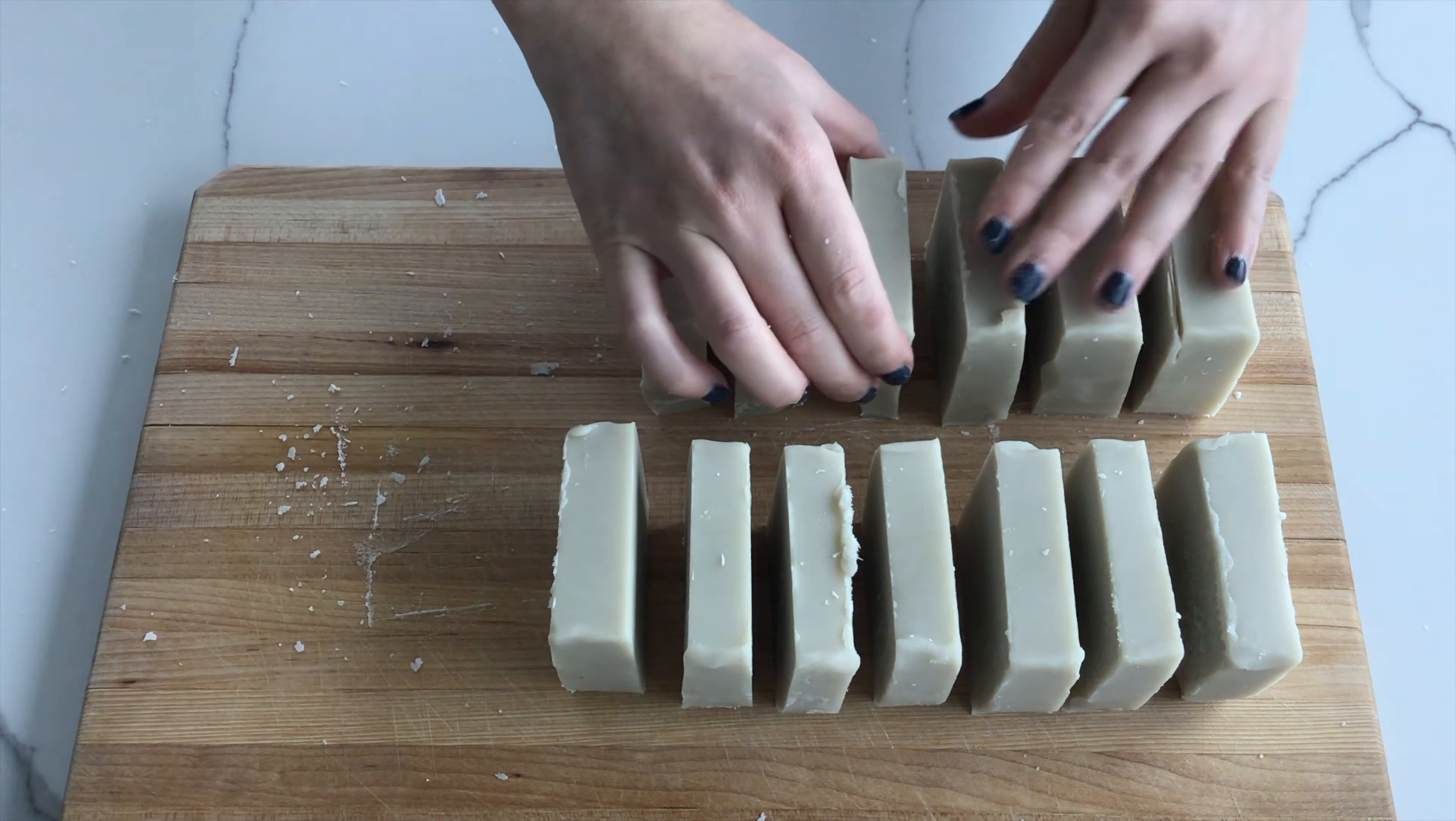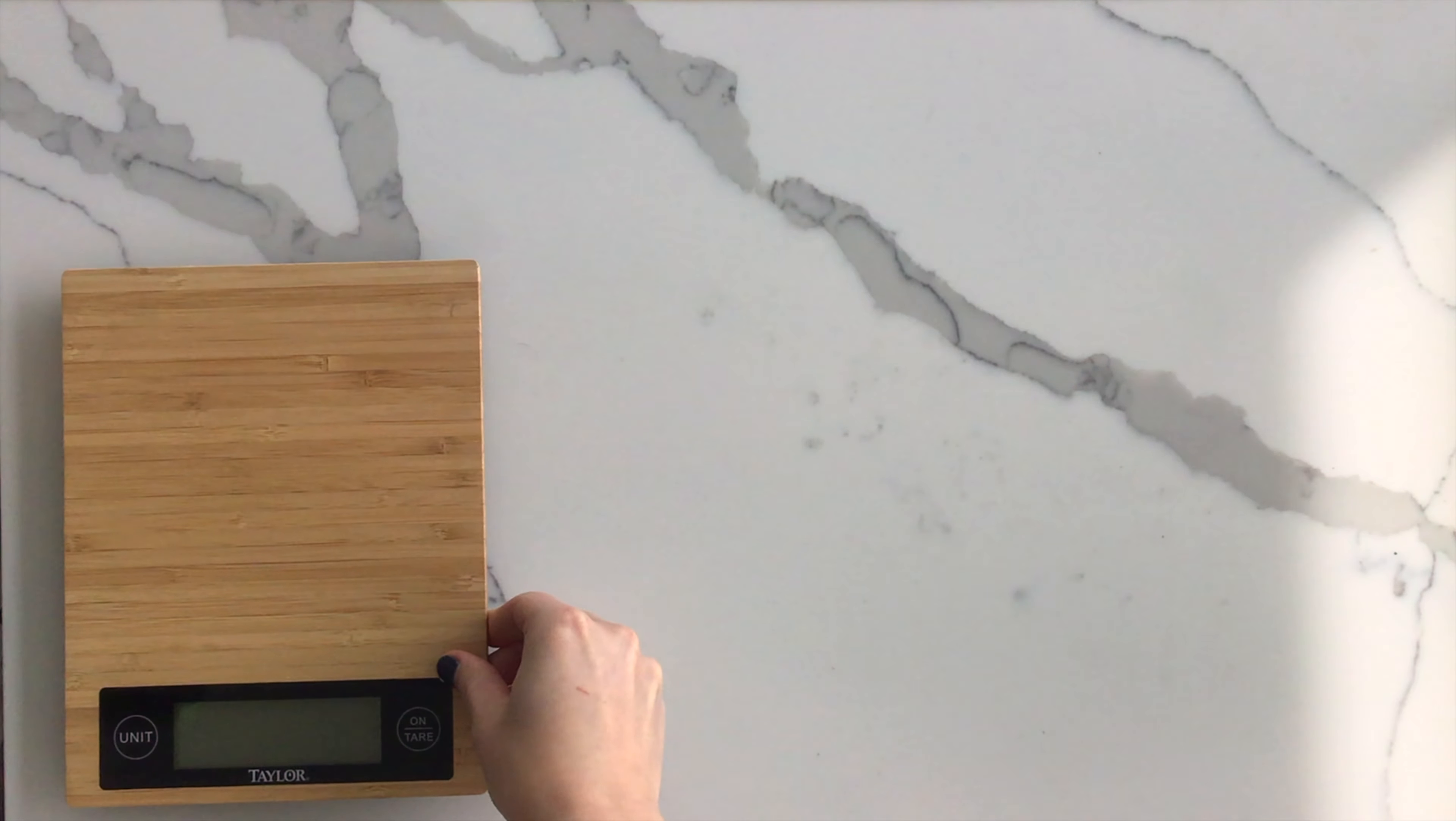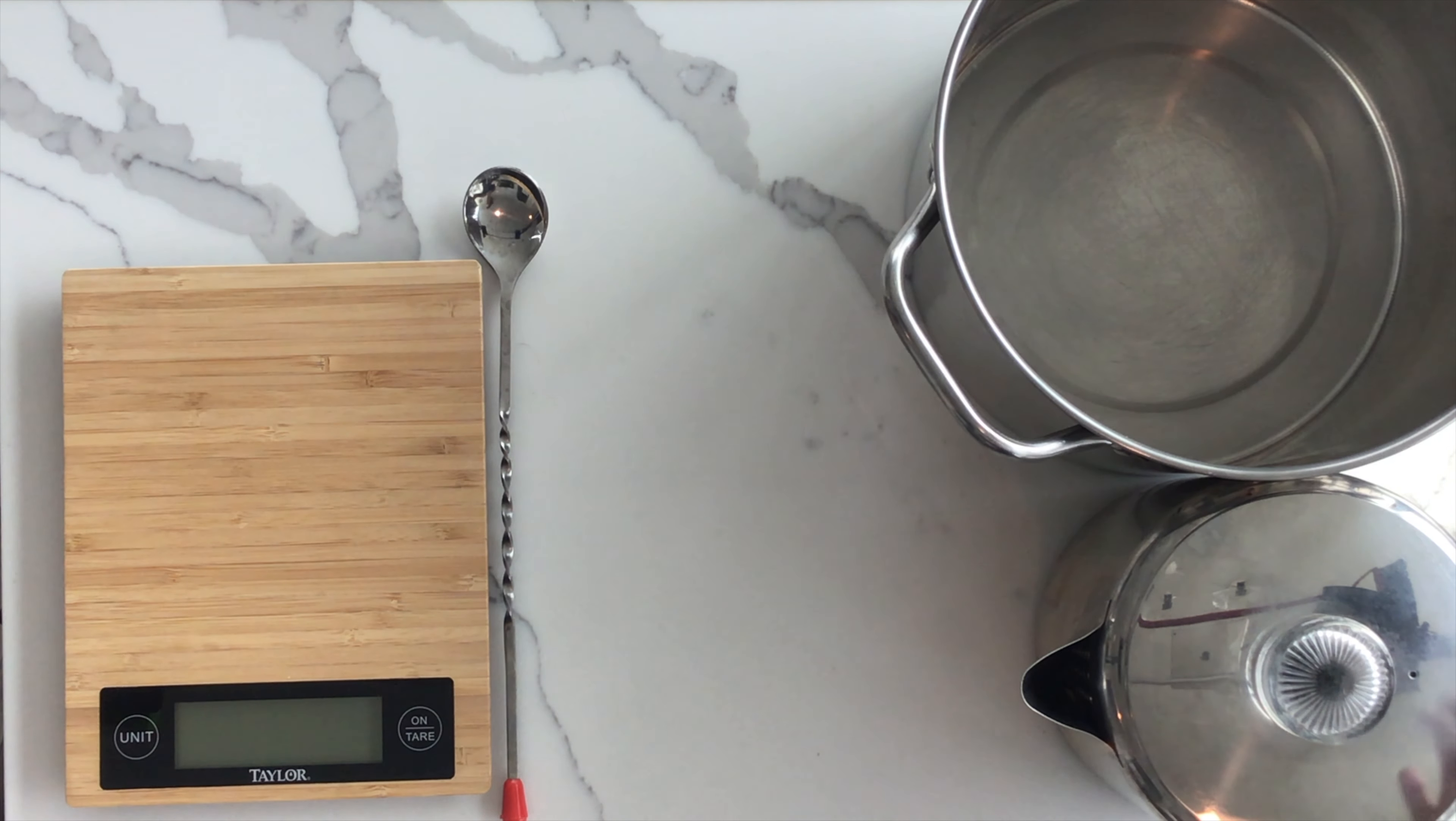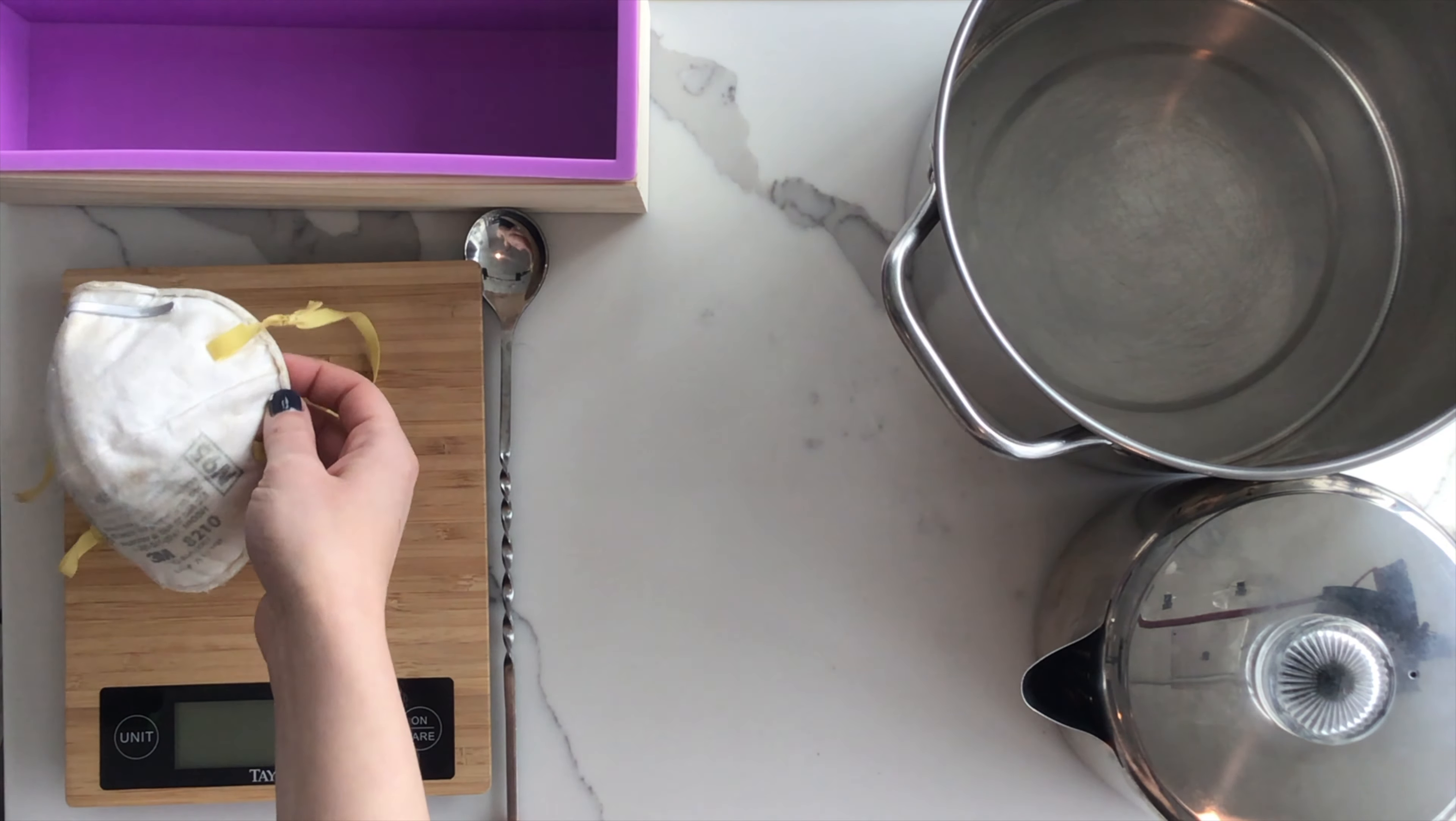The ingredients and items list is simple. You will need a kitchen scale with a tare function, a long stainless steel spoon, a stainless steel pot, a smaller stainless steel pitcher with a handle, a mold or plastic container, and a mask.